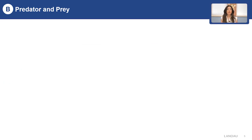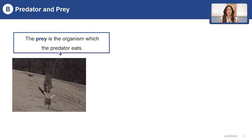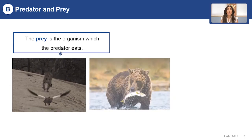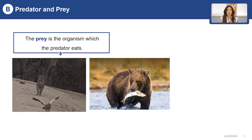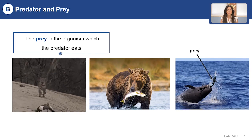Now let's talk about the prey. What is a prey? The prey is an organism which the predator eats. Look at this picture where the seal caught the fish. This poor fish is a prey.